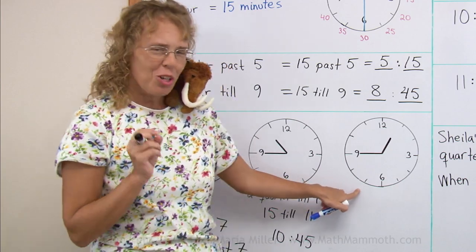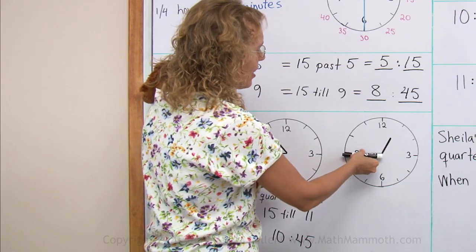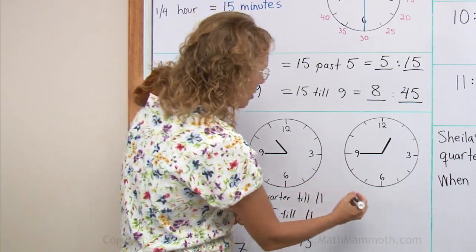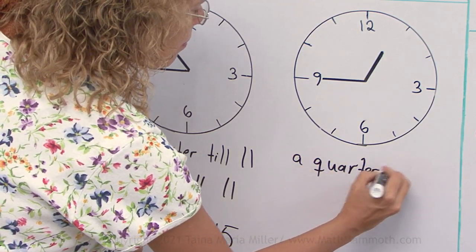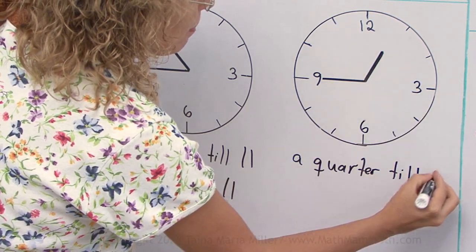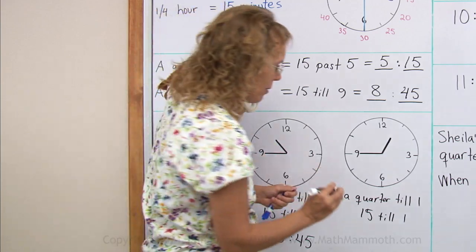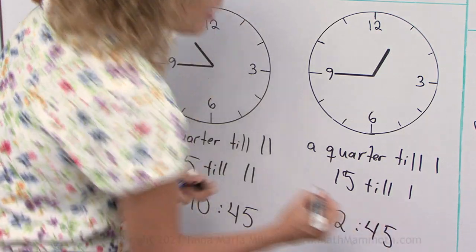One more. Try this on your own. Again, the minute hand has the same 15 minutes to go. So we have a similar situation. A quarter till one. Fifteen till one. Or twelve hours and 45 minutes.